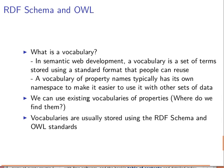Of course, we can use existing vocabularies of properties. These are made available with their own namespaces and URIs. But where do we find them? We need to search for them or ask experts. I believe there is actually a website that lists all the available vocabularies — you can search around or ask someone with more experience.